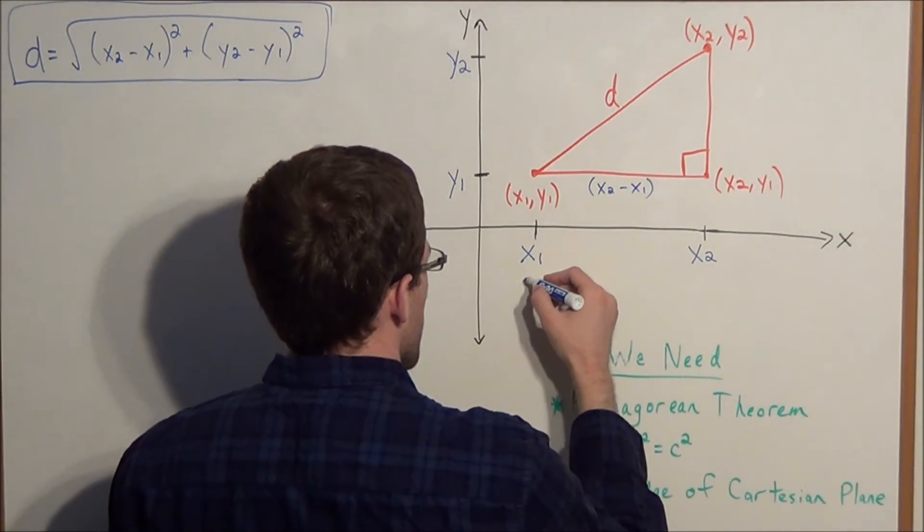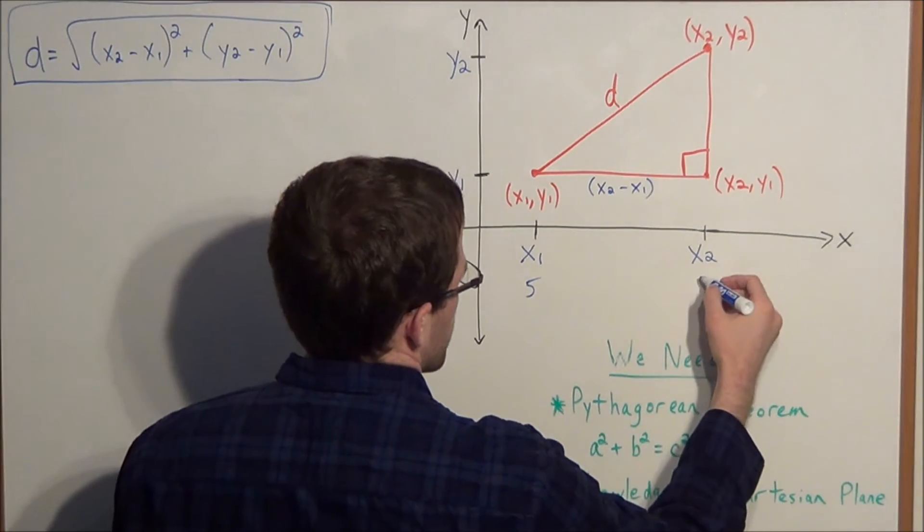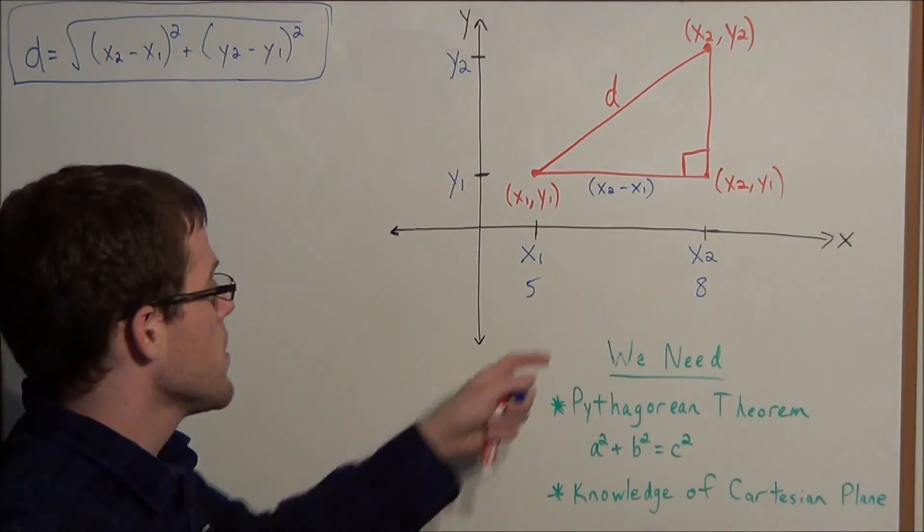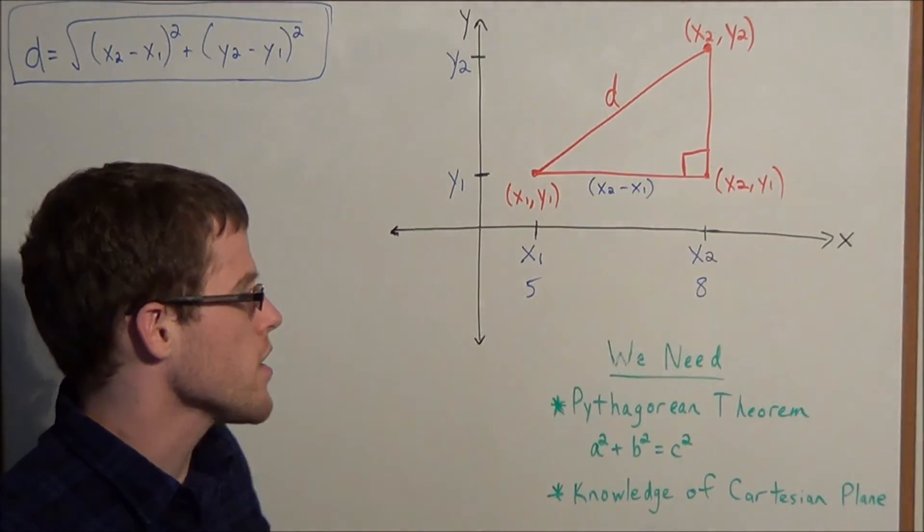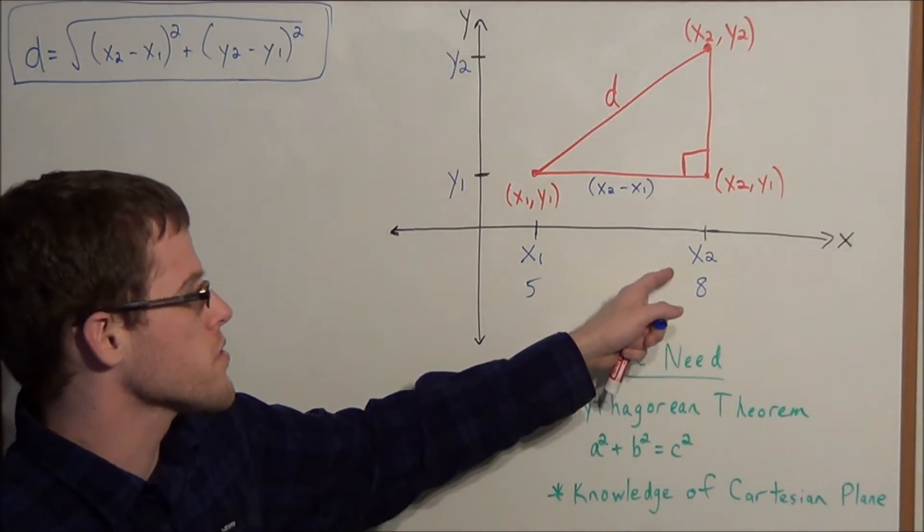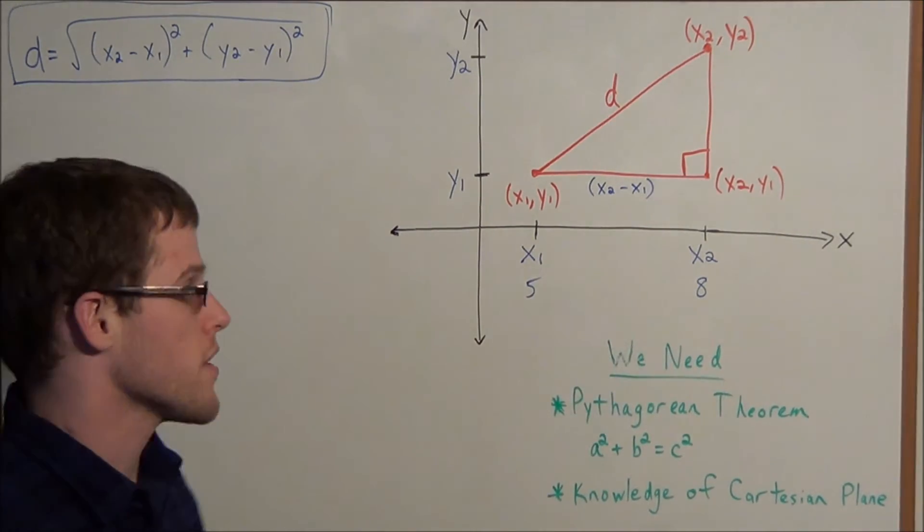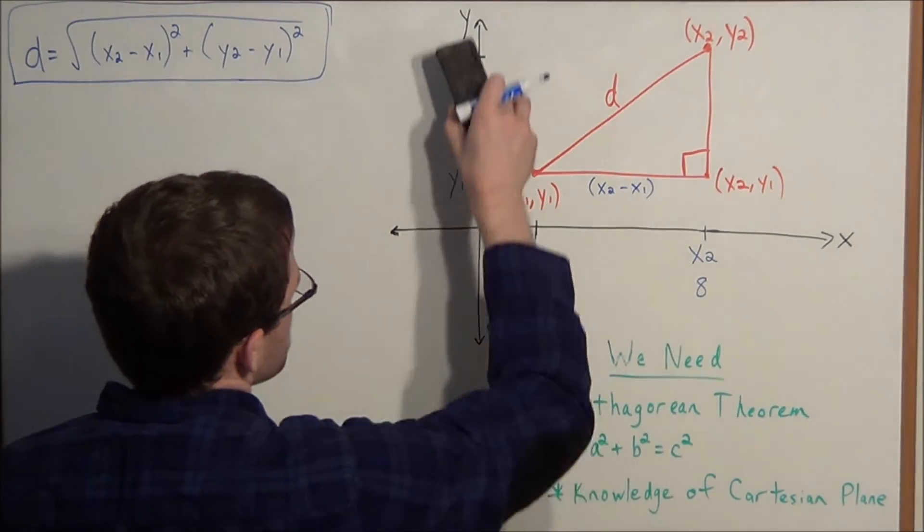Well suppose for a second that this x coordinate was 5 and let's say this x coordinate was 8. We could just count the distance between them to be 1, 2, 3. We would go to 6, 7 and then 8. Or we could use subtraction. We could use x2 minus x1 so we would do 8 minus 5 is also 3. So subtraction is just an effective way to model distance between two coordinates.